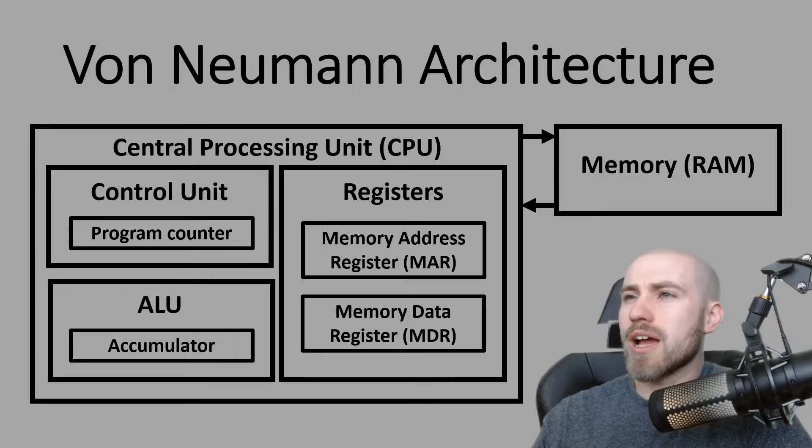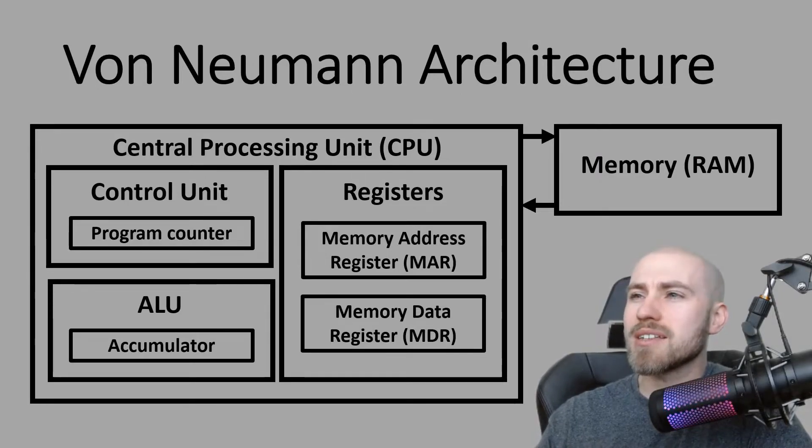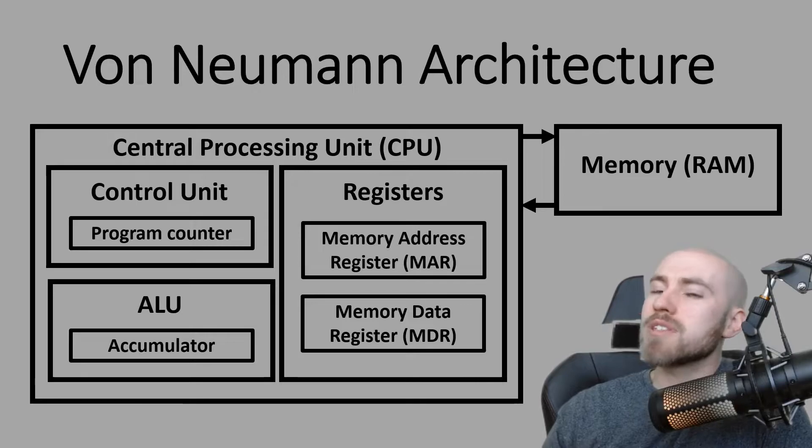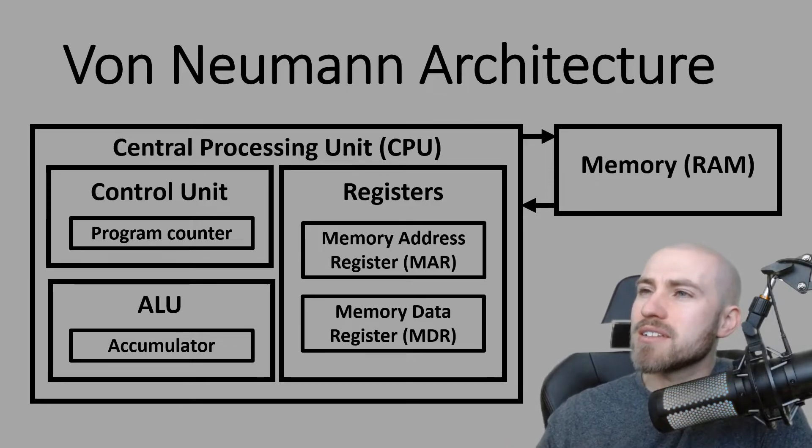So they're the three main parts of the CPU, but now we're going to look at what's Von Neumann architecture. Okay, so put together this diagram which hopefully makes it nice and simple to understand. So in terms of what Von Neumann architecture actually is, it's a system where the CPU runs programs that are stored in memory. So as we know, the FDE cycle gets carried out billions of times in one second, and that's where the CPU will fetch instructions that are in memory.